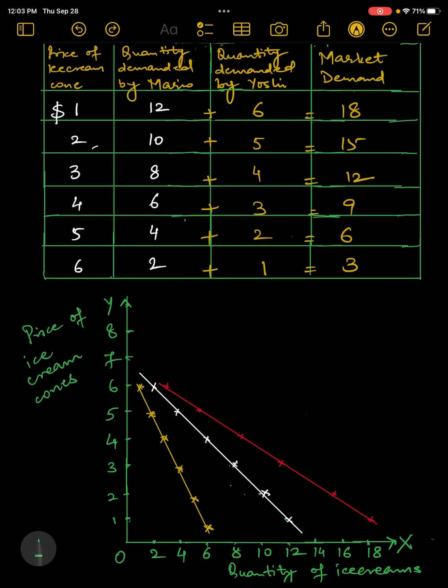The quantity demanded in a market is the sum of the quantities demanded by all the buyers at each price. Thus the market demand curve is found by adding horizontally the individual demand curves. For example, at a price of $4 here, we see that the quantity demanded by Mario is 6 ice creams, by Yoshi it's 3, and the total market demand at a price of $4 is 9.